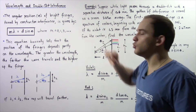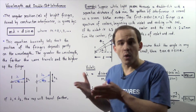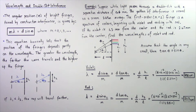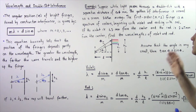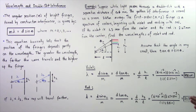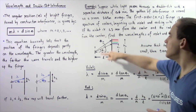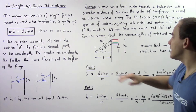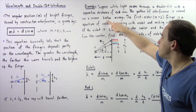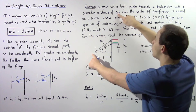Let's apply this result to an example. One particular type of light that contains different types of wavelengths is white light. Suppose white light passes through a double slit with a separation distance of 0.6 millimeters. The pattern of interference is viewed on a second screen 2.25 meters away from the double slit. So this is our double slit, this is our screen, and the distance L is equal to 2.25 meters, while the distance between the two slits is 0.6 millimeters.